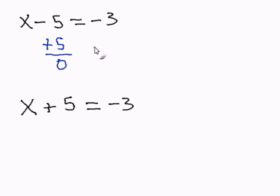And I have to do the same thing on the other side of the equal sign to balance the equation. So I add 5 on the other side of the equal sign. Negative 3 plus 5 is 2.